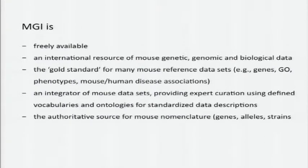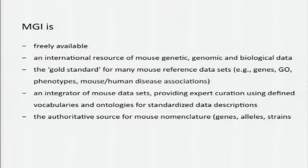Some quick facts: MGI is a freely available database. It's an international resource for the genetic, genomic, and biological data for mouse. It's a gold standard for a lot of mouse reference data sets, including genes, GO, phenotypes, and mouse-human disease associations. We're an integrator of mouse data sets and provide expert curation using defined vocabularies and ontologies, and we're the authoritative source for mouse nomenclature.